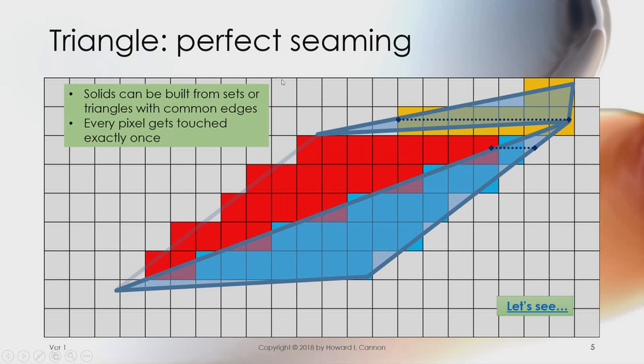So what we can do is we can take any solid, we can decompose it into triangles, and we can then make sure that when we draw those triangles, every pixel inside that solid will be hit once and only once.